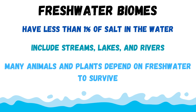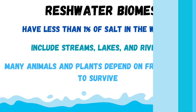These animals include salmon, many types of fish, and lots of different plants. This also includes alligators, because wetlands — which are a big part of Florida, like the Everglades, swamps, and wetlands — are all freshwater biomes. This means that freshwater biomes host a unique variety of life that only exists in these freshwater environments.